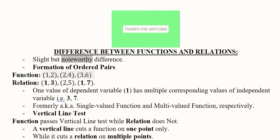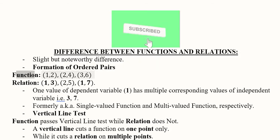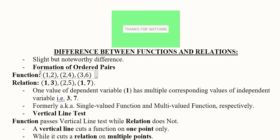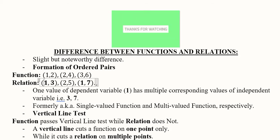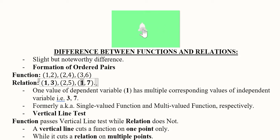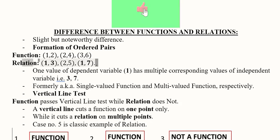If we consider some ordered pairs representing a function: 2 gives rise to 1, 4 gives rise to 2, and 6 gives rise to 3. Now in another case, 7 gives rise to 1 as well as 3 gives rise to 1, meaning the dependent variable y has a repeated value for different values of the independent variable — so in that case it is a relation.